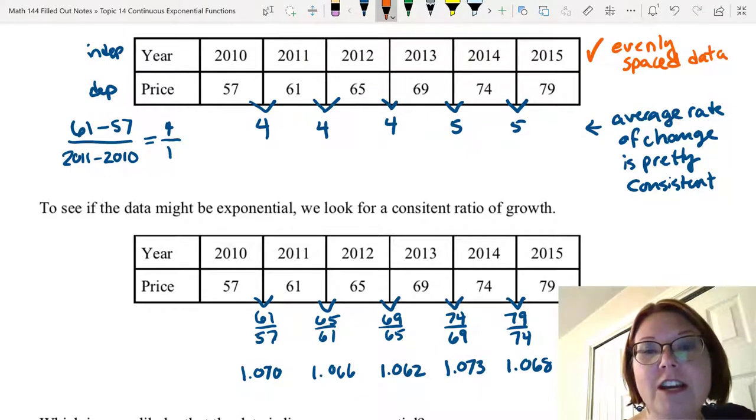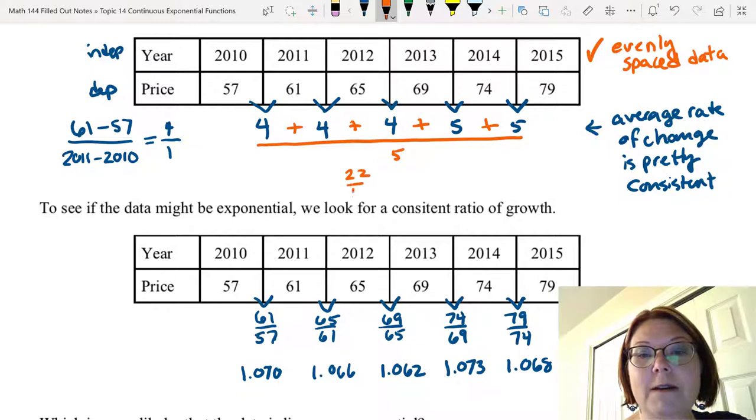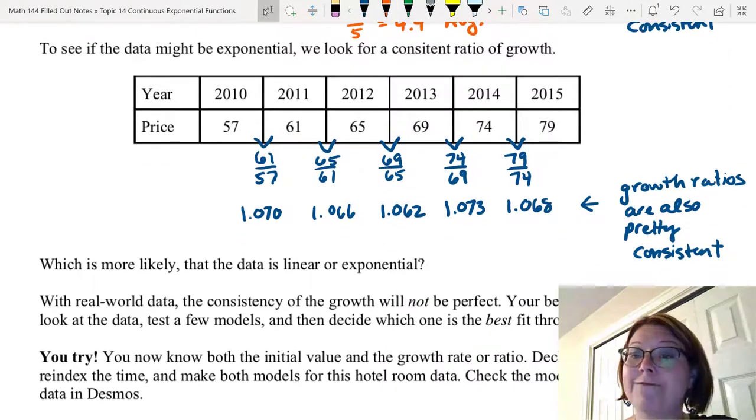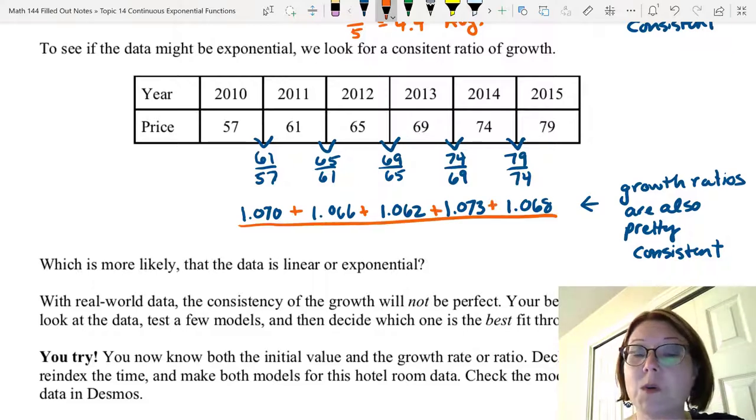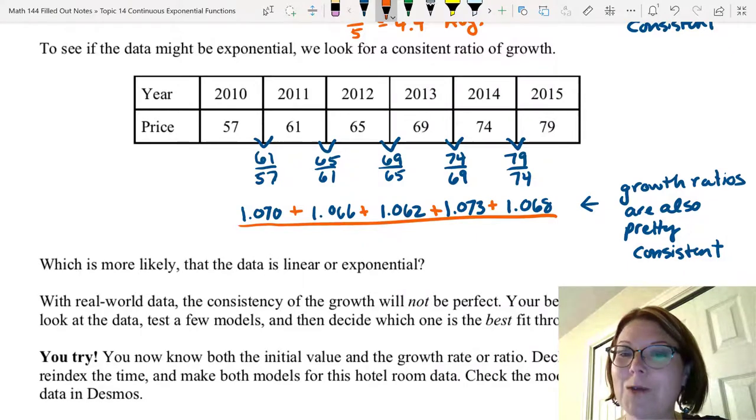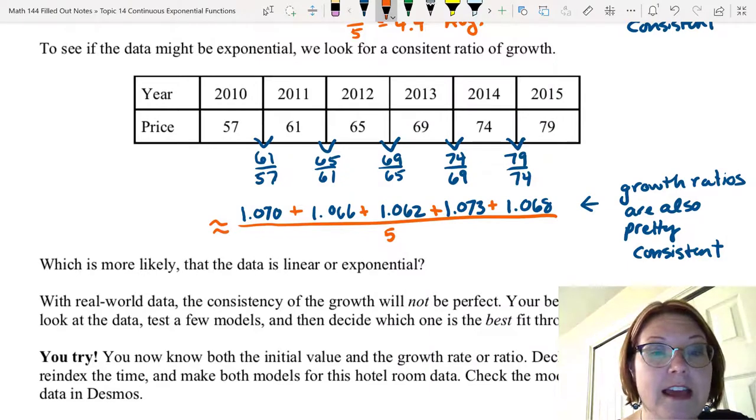So I'm going to calculate an average for both the average rate of change and for the growth ratios. Let's start with that average rate of change. I'm going to add up the five values, 4 plus 4 plus 4 plus 5 plus 5, and divide that by 5. That's 22 divided by 5, or 4.4 for an average. For the growth ratios, again I'm going to add up all of the growth ratios we had. That's 1.070 plus 1.066 plus 1.062 plus 1.073 plus 1.068, and I'm going to divide that by 5. And that gives us an average of 1.0678.